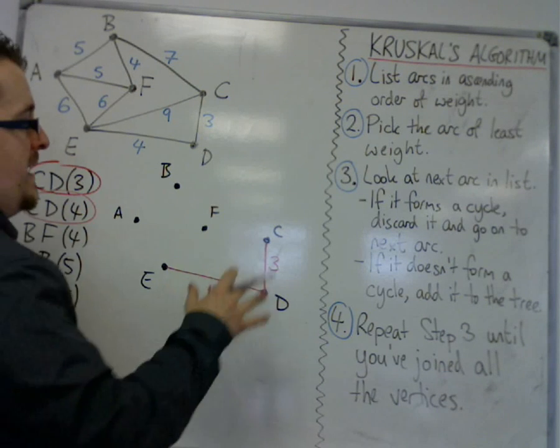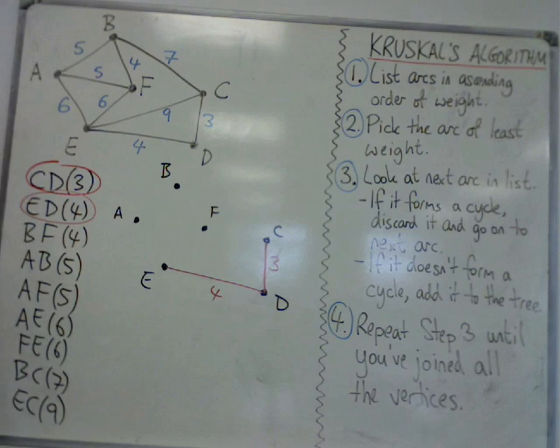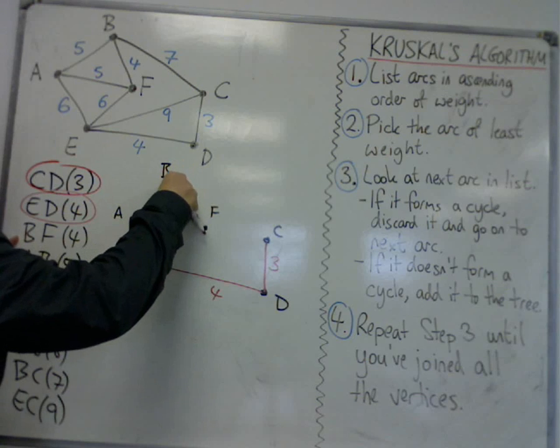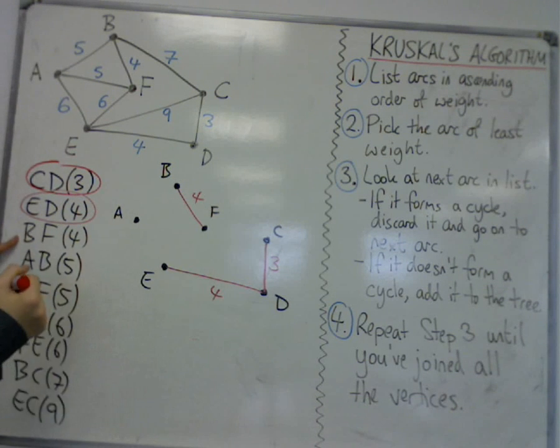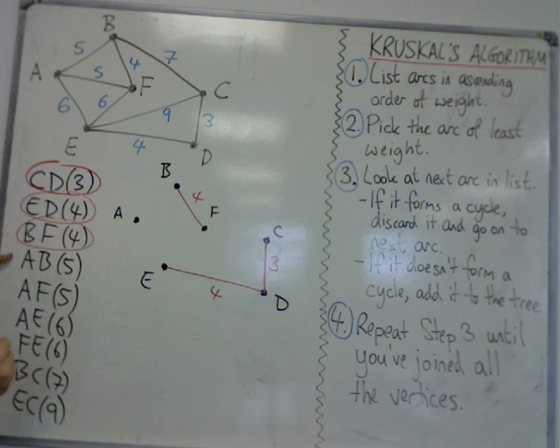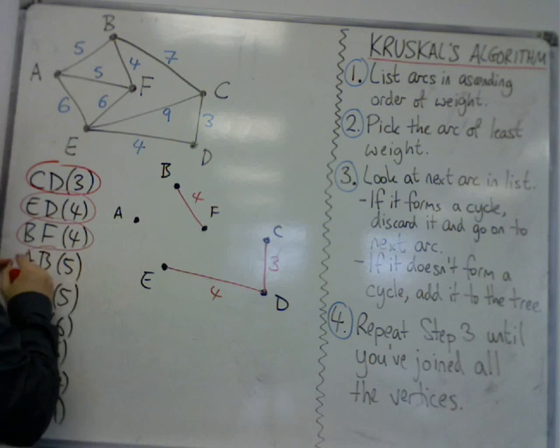Now I've got BF. So I keep repeating step three until all the vertices have been joined. So BF, that won't create a cycle, so I'm going to add that in. BF. Then I've got AB. That won't create a cycle either, so I'm going to have AB.